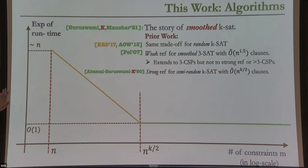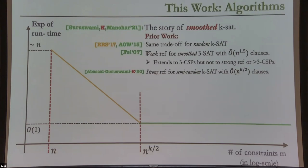The direct starting point for our work is a paper we wrote with our student Jackson Abascal a couple of years ago, where we were able to handle a slightly more general random model called the semi-random model. The semi-random model is a special case of the smooth model where the flipping probability is exactly one-half for every literal — the clause structure is still arbitrary, but every literal is purely random. In that work we were able to get the polynomial-time end of the trade-off: strongly refuting all KCSPs, and in particular KSAT.